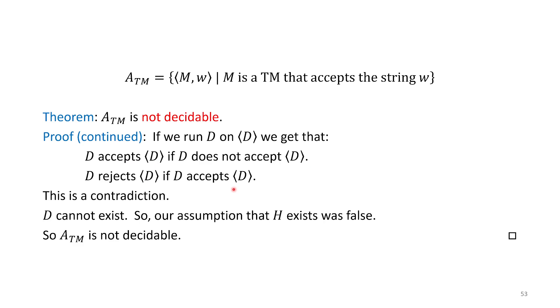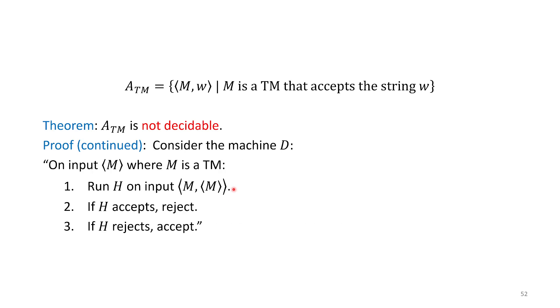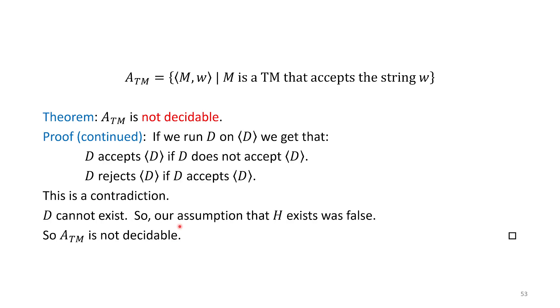Vice versa, it will only reject if it originally accepted. This is a pure contradiction. This machine D cannot possibly exist. But let's go back. If H exists, then we could totally build D. There's nothing fancy or funny about this machine. It just simulates a machine. So if H really exists, D should exist. When we get here, we're saying D is impossible. D cannot exist. So our assumption that H exists was false. Therefore, ATM is not decidable.